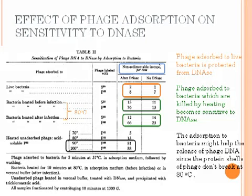Table 2 shows the effect of phage adsorption on sensitivity to DNase. There are four treatments: phage adsorbed to live bacteria, bacteria heated before or after infection, and heated unabsorbed phage. Phage was labeled with P32 and S35, co-cultured with bacteria in adsorption media for five minutes, then washed and centrifuged. The low percentage of P32 in non-sedimented isotopes shows that phage adsorbed to live bacteria is protected from DNase. After heating unabsorbed phage at different temperatures, only very high temperature — more than 90 degrees — causes the release of phage DNA.